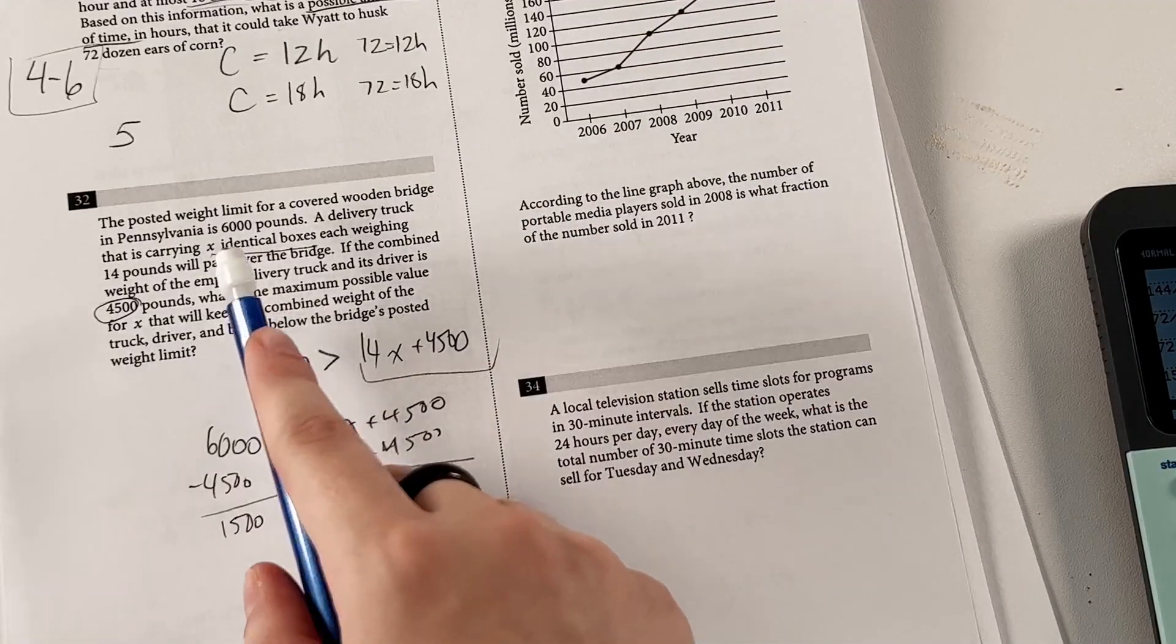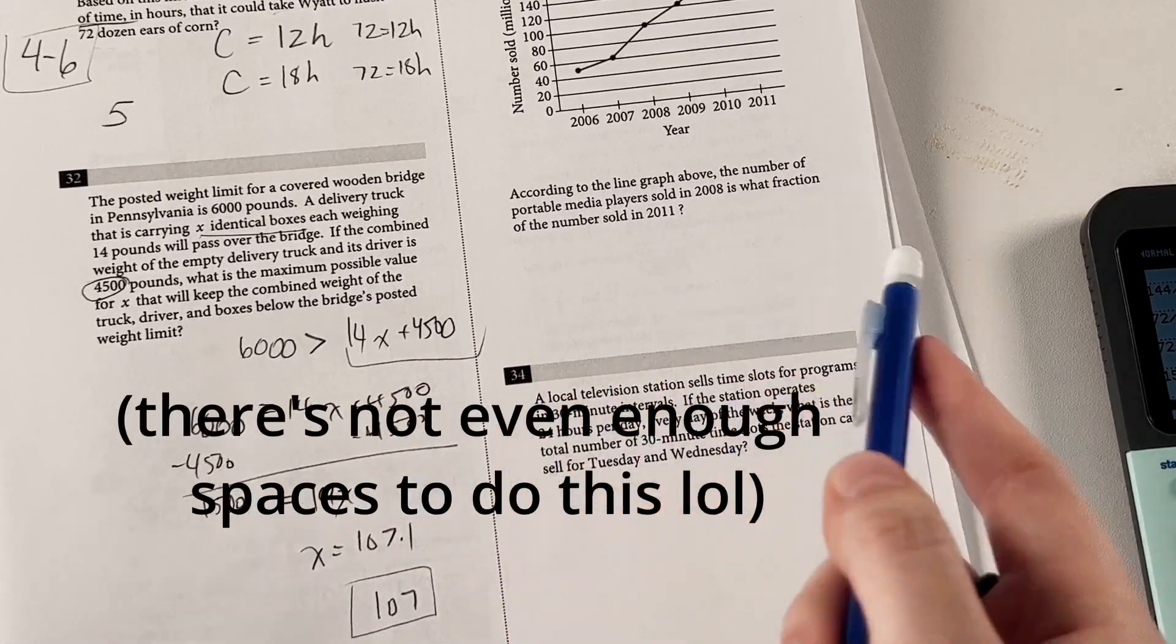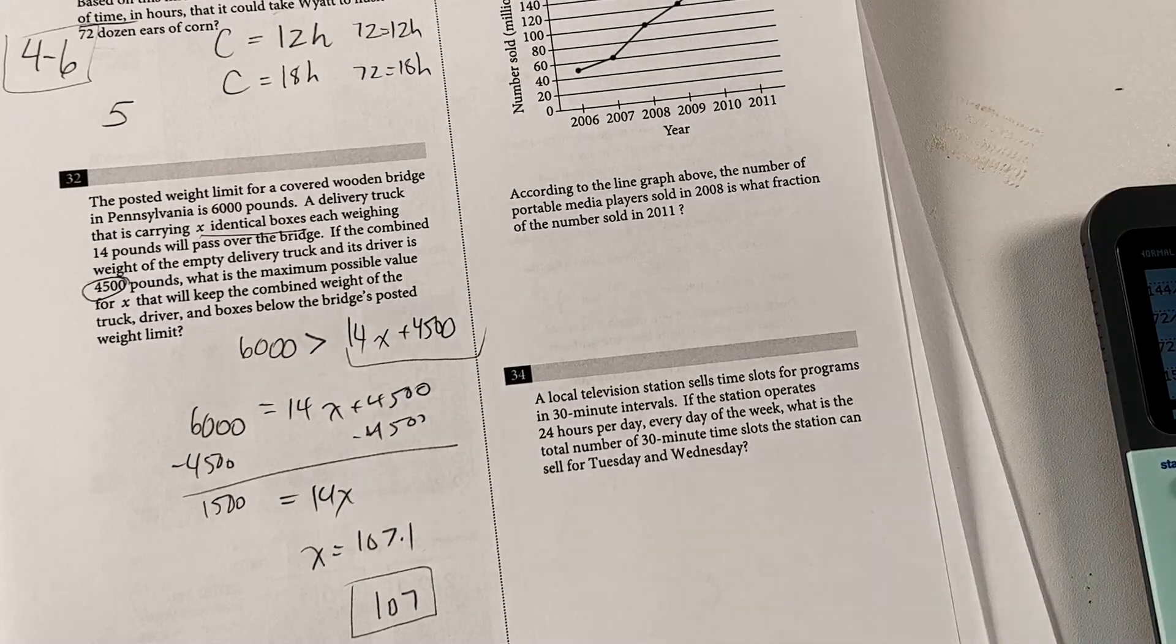It's very important to make sure you're reading what the x actually represents, because otherwise you might bubble in 107.1 as your answer, and that's not right, because you can't have a tenth of a box in practical terms.